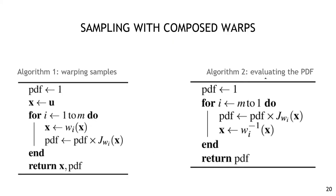Once we've fit our warps and we're ready to sample, the procedure is absolutely straightforward. The sampling procedure simply applies each warp in succession to the sample point and accumulates the density product along the way. The evaluation procedure is just the same thing run in reverse in order to evaluate the probability density of a given point in space. One thing to notice is that the density evaluation involves the inverse warp, or what we normally think of as the cumulative density function or CDF. So in general we need all three functions available: the density, the cumulative, and the inverse cumulative or warp.